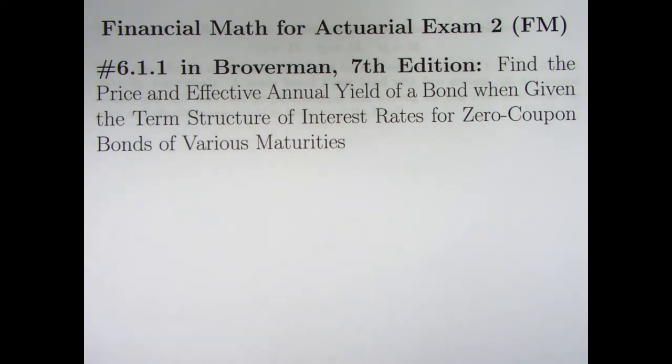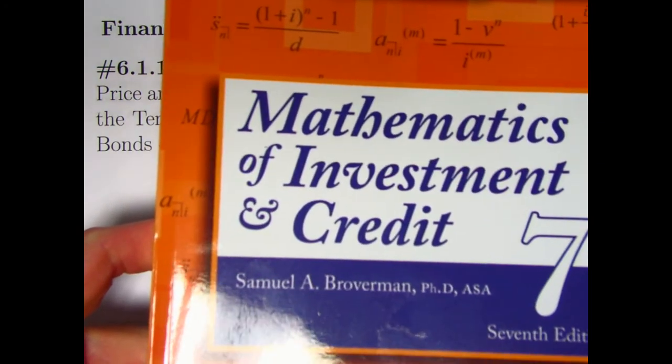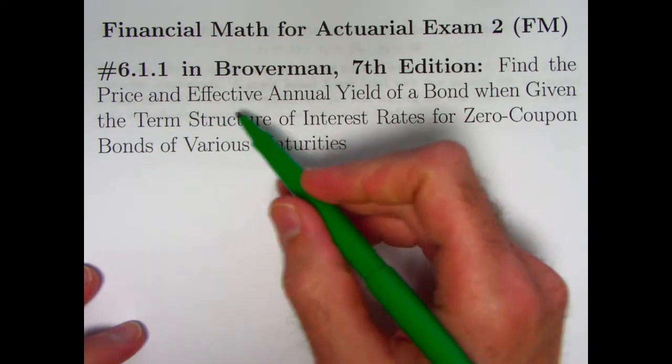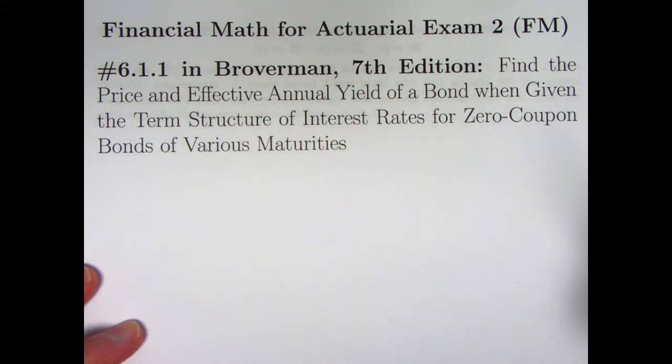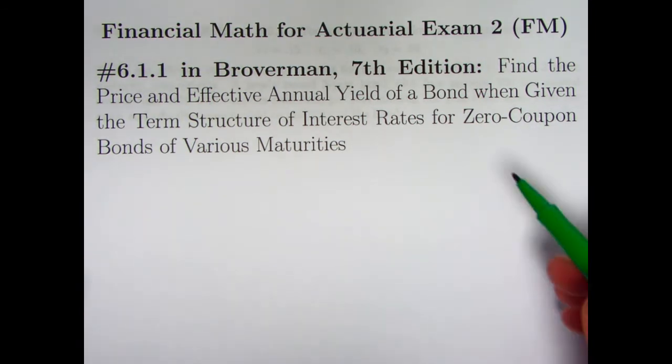Hello. In this video, we're going to move into Chapter 6 of the Mathematics of Investment and Credit, 7th edition by Samuel Broverman. Chapter 6 is about the term structure of interest rates, and we're going to do exercise 6.1.1. We'll be finding the price and the effective annual yield of a bond when we're given what's called the term structure of interest rates for zero-coupon bonds of various maturities.